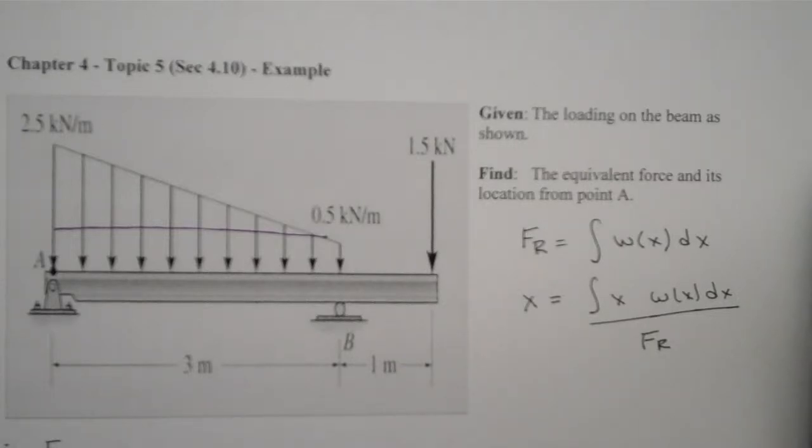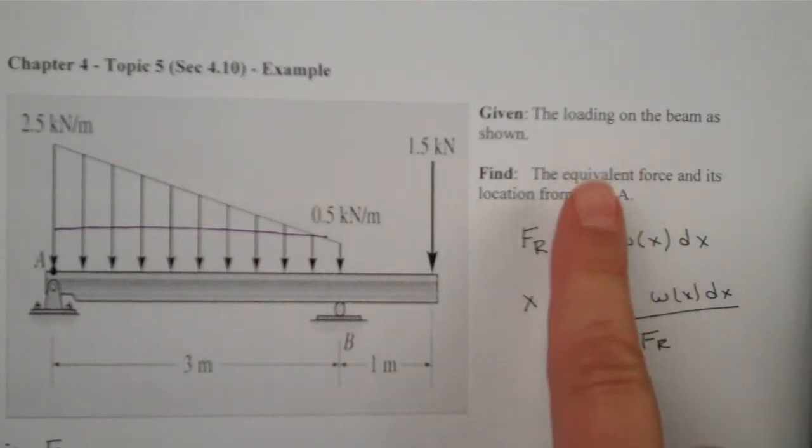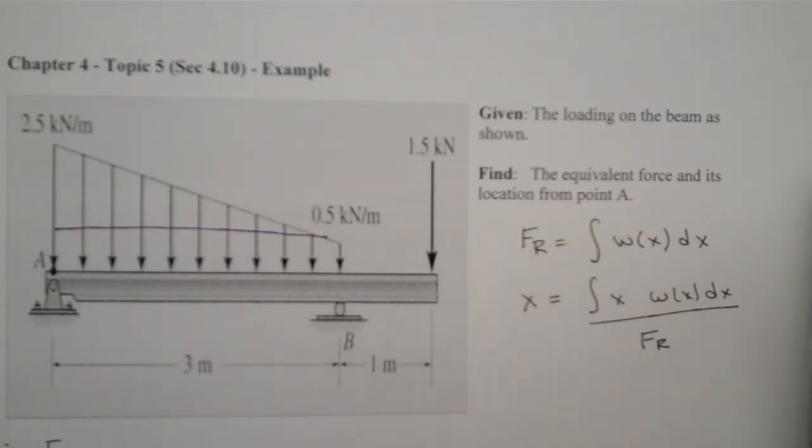This is the solution for Chapter 4, Topic 5, working with distributed loads. What we're going to try to do is replace this distributed load system with one force acting at one position that will give us an equivalent moment about point A. We are given the loading system as shown, and we're asked to find the equivalent force and its position from point A, so we're going to take a moment about point A and look to see what that moment is.